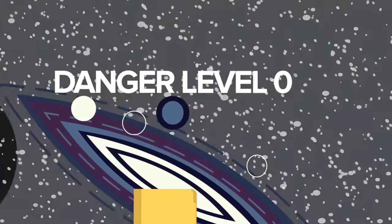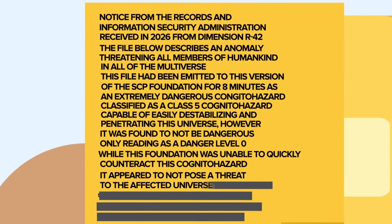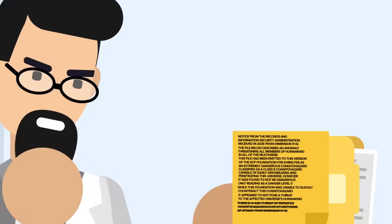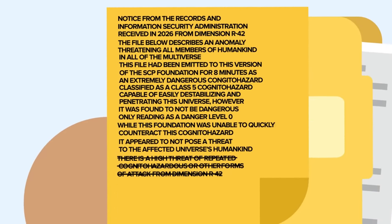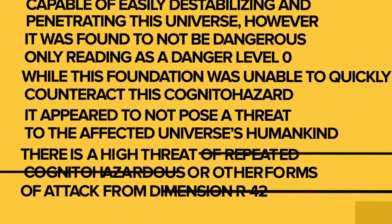However, it was found to not be dangerous, only reading as a danger level zero. While this Foundation was unable to quickly counteract this cognitohazard, it appeared to not pose a threat to the affected universe's humankind. Part of this notice is crossed out, indicating that it is no longer true. There is a high threat of repeated cognitohazardous or other forms of attack from Dimension R-42. Instead, this part has been replaced with the following fact. Dimension R-42 no longer exists.